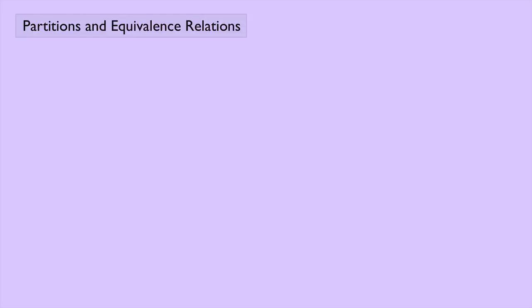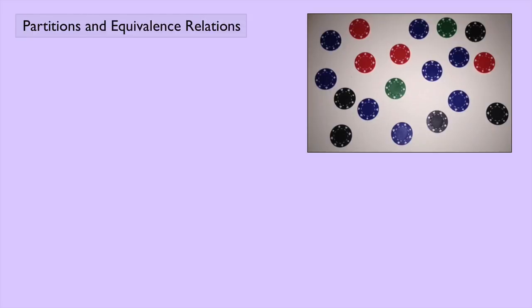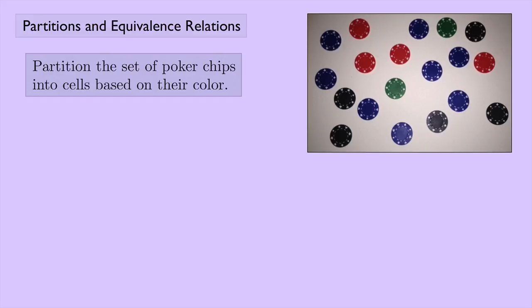Let's suppose that you have a set of poker chips, and there are four different colors: red, blue, black, and green. We define a partition in the following way — partition the set of poker chips into cells based on their color. What would you get?